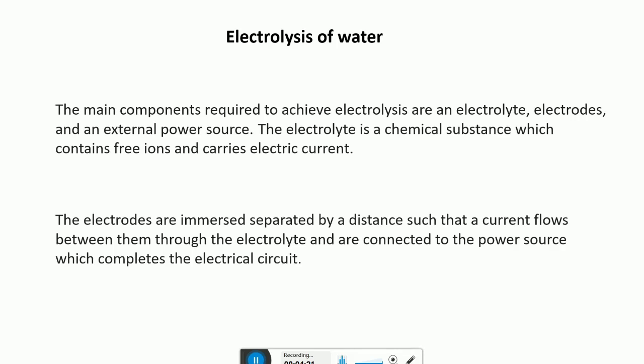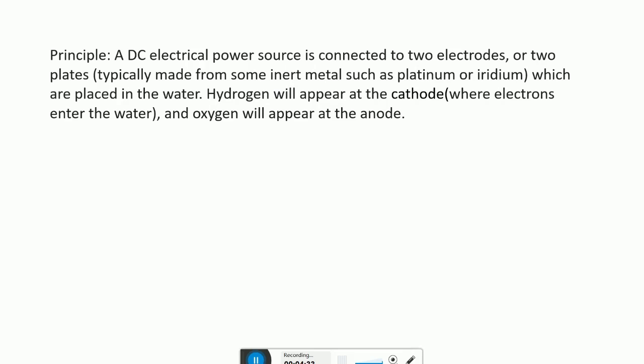Out of these two electrodes, one is the anode and the other is the cathode. The anode is connected to the positive terminal of the battery and the cathode is connected to the negative terminal of the battery. The principle of electrolysis of water is that a DC electrical power source is connected to two electrodes or plates placed in water, then hydrogen will appear at the cathode and oxygen will appear at the anode.